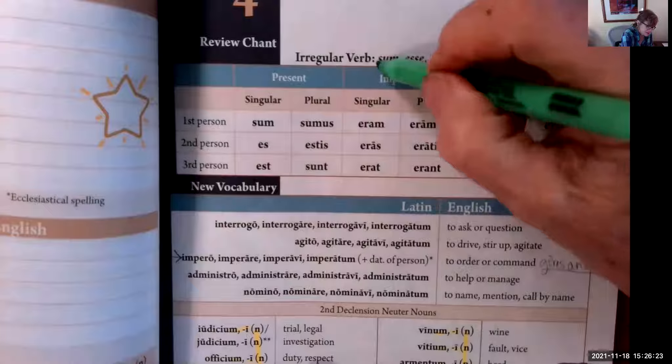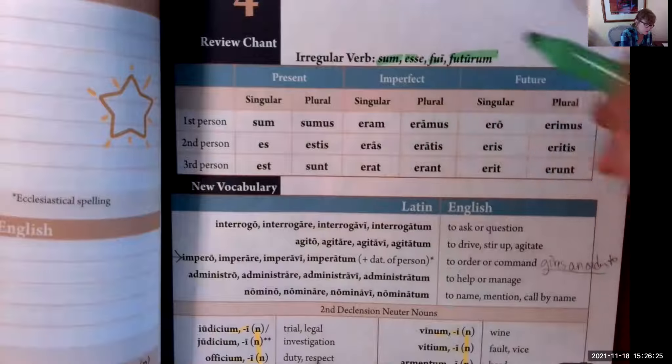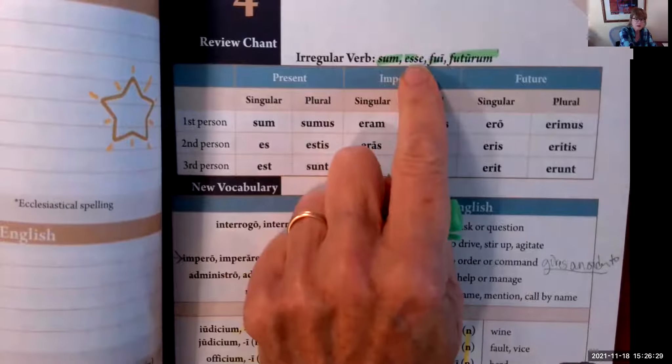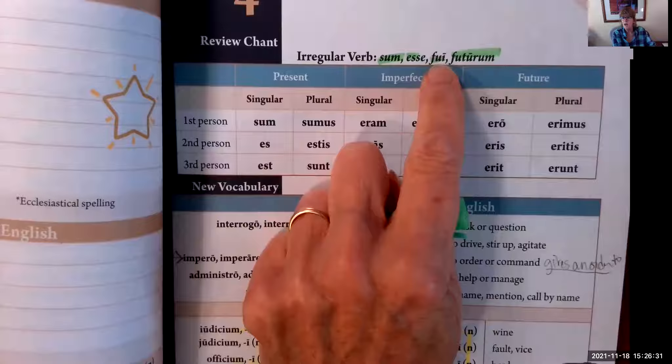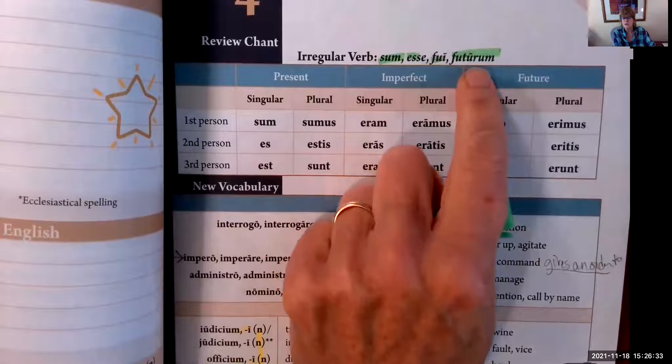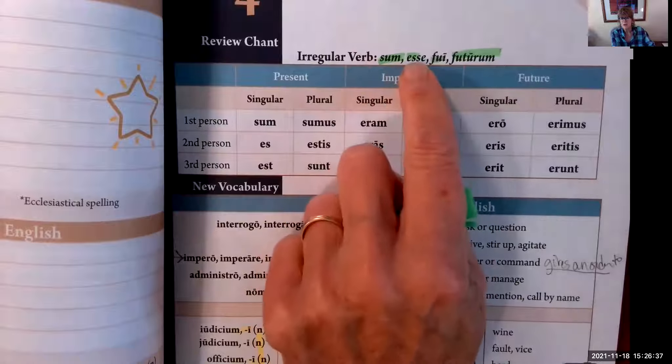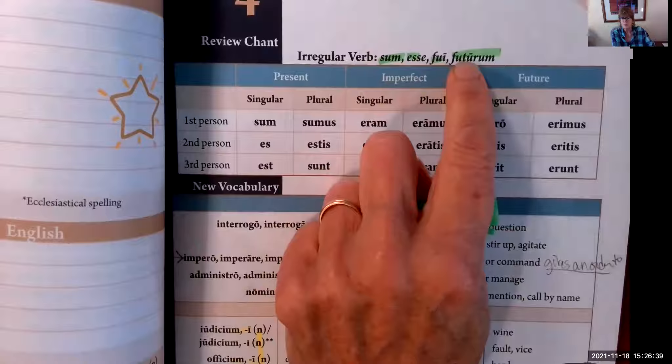Sum, esse, fui, futurum. Sum means 'I am,' esse is 'to be,' fui is 'I was,' and futurum is 'I am about to be.' I am, to be, I was, I am about to be.